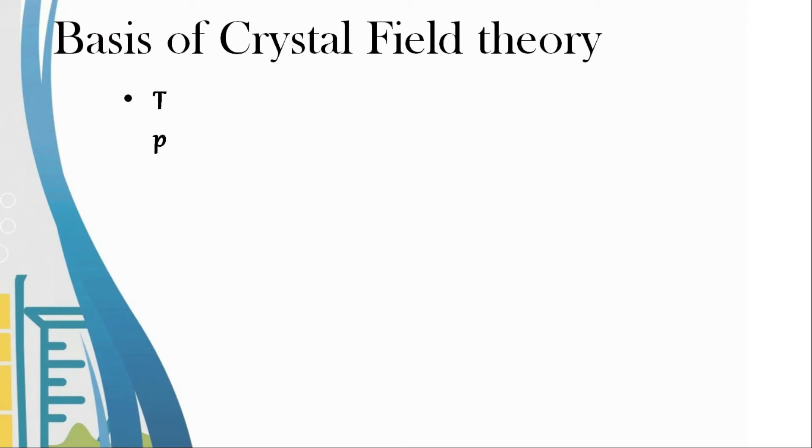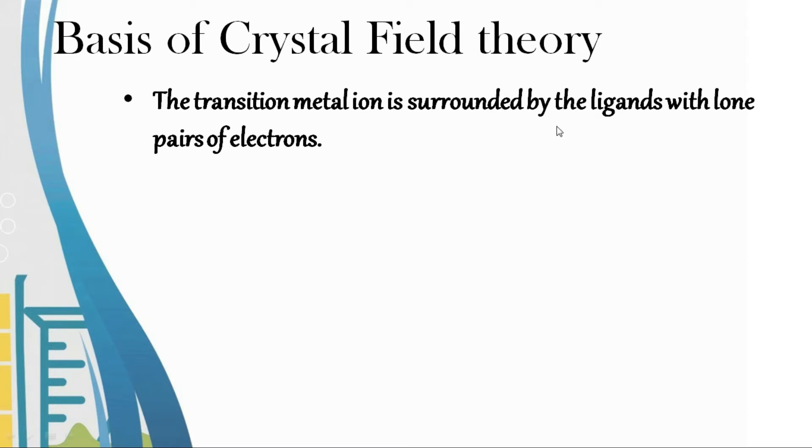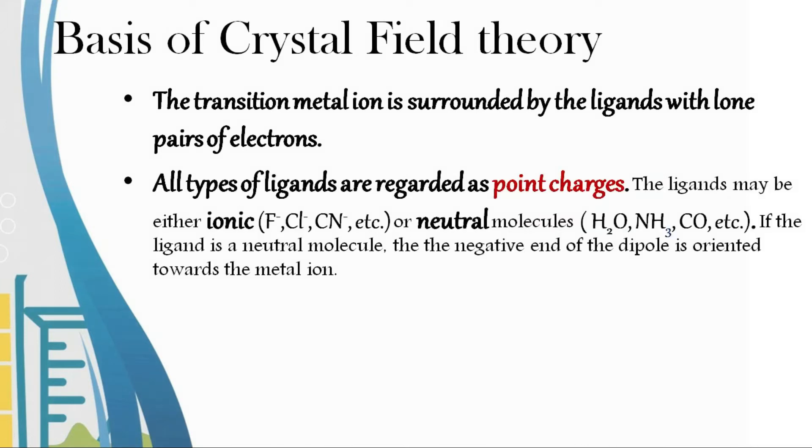The basis of crystal field theory: First, the transition metal is surrounded by ligands with lone pairs of electrons. All ligands act as point charges. The ligands can be ionic like Cl- or CN-, or neutral like water, ammonia, or carbonyl. If the ligands are neutral molecules, then the negative end of the dipole is directed towards the metal ion.